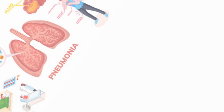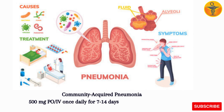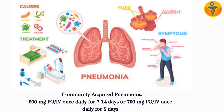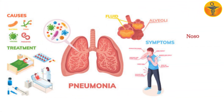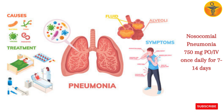Indications with dosages. Community Acquired Pneumonia: 500 mg oral or intravenous once daily for 7–14 days, or 750 mg oral or intravenous once daily for 5 days. Nosocomial pneumonia: 750 mg oral or intravenous once daily for 7–14 days.